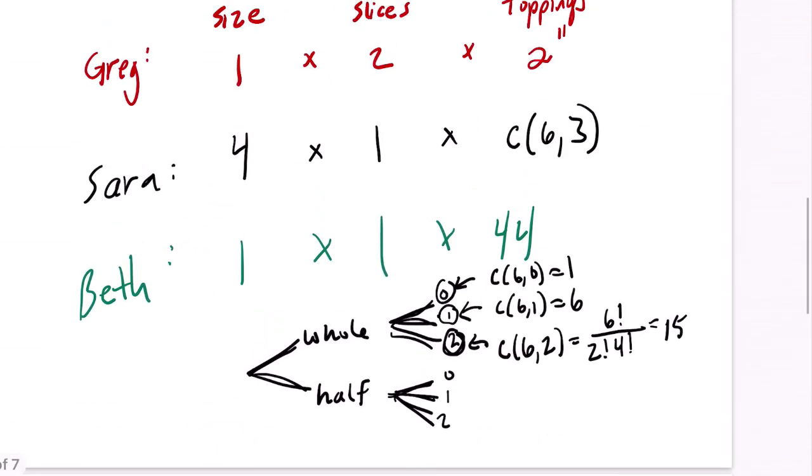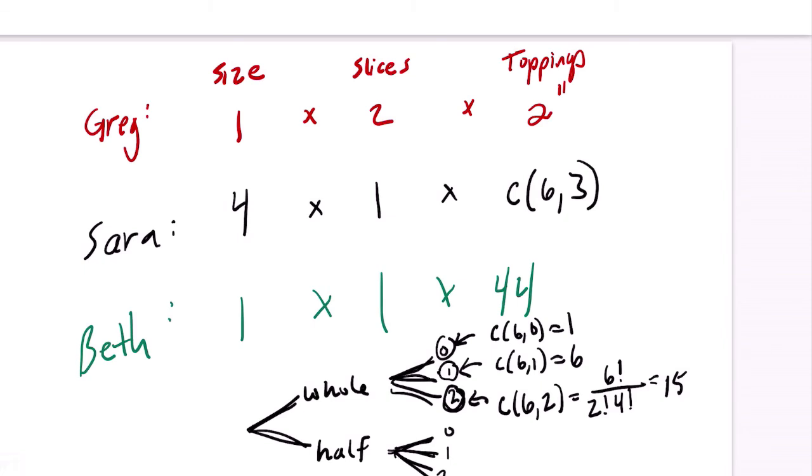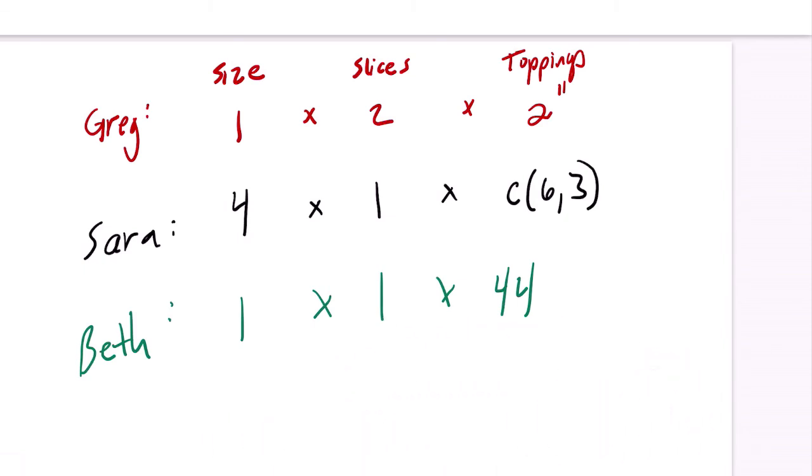Now, all together, let's assume they're all placing one order together. What's going to happen? Well, we multiply these things. The amount for Greg times the amount for Sara times the amount for Beth. And I'll just do that on a calculator. For Greg, it's two times two to the 11th. So it's two to the 12th, times four times six choose three times 44. So we get a number here. Here's our final answer - 14,417,920. That's a lot of combinations. All right. Hope that helped.